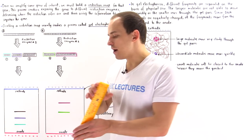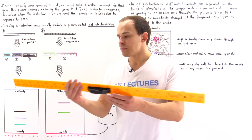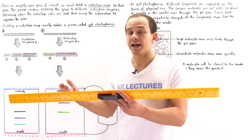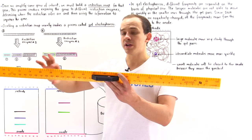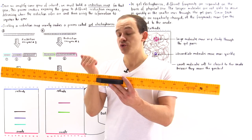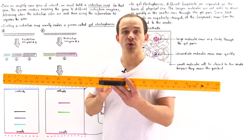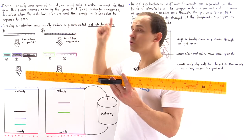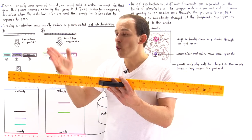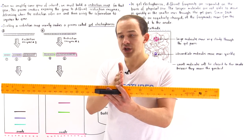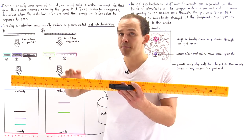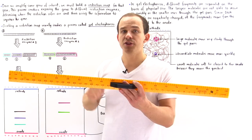Let's suppose that we have the following ruler, and this ruler describes our gene of interest that we amplified. So this is the double-stranded DNA molecule that describes the gene that we're studying. A restriction map is basically a description of all the different locations found on this gene where our restriction enzymes can bind to and cleave that gene.